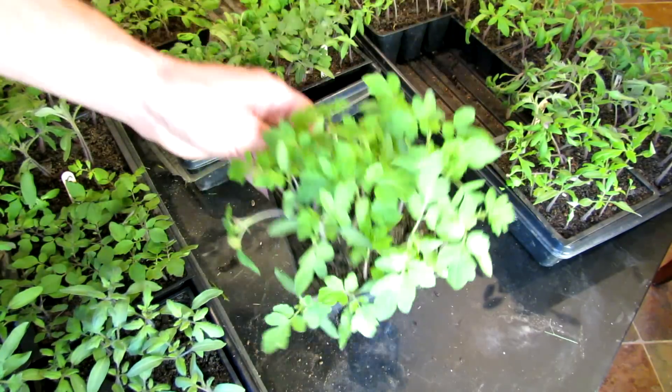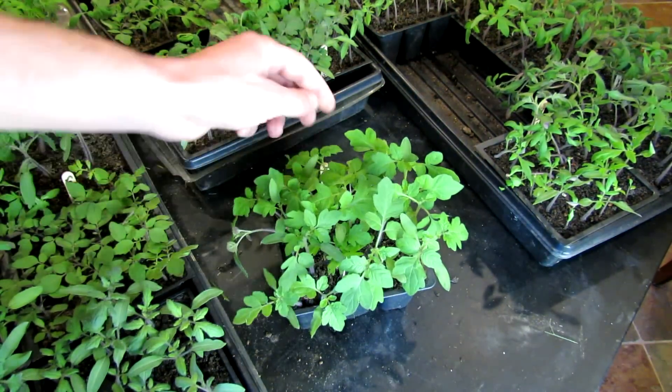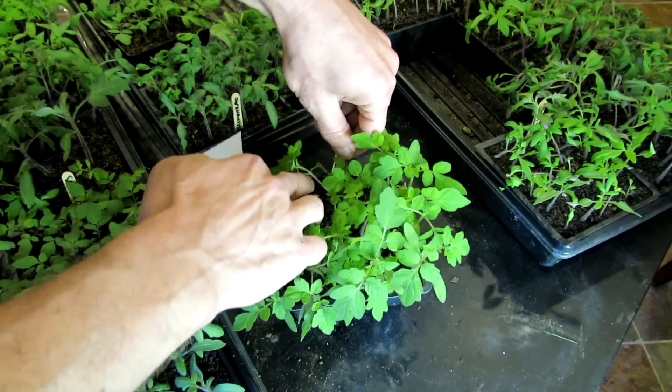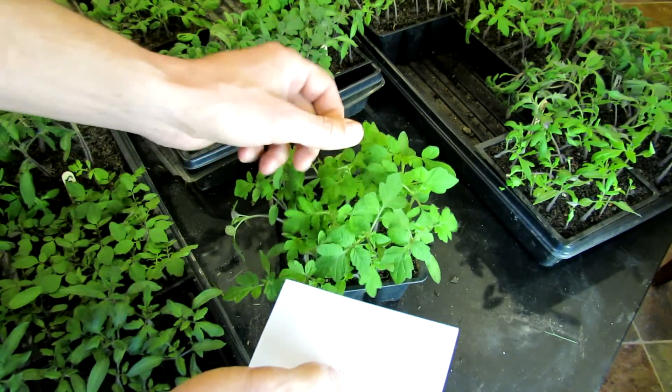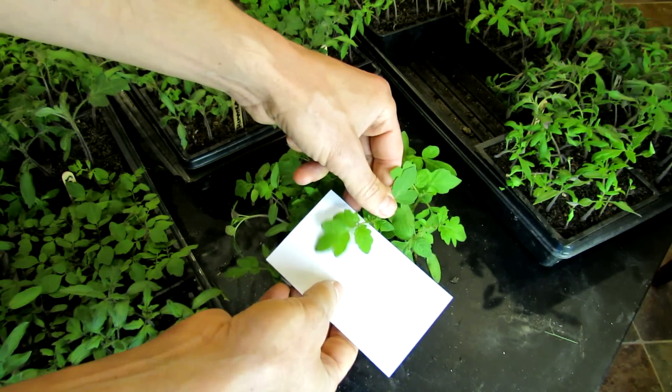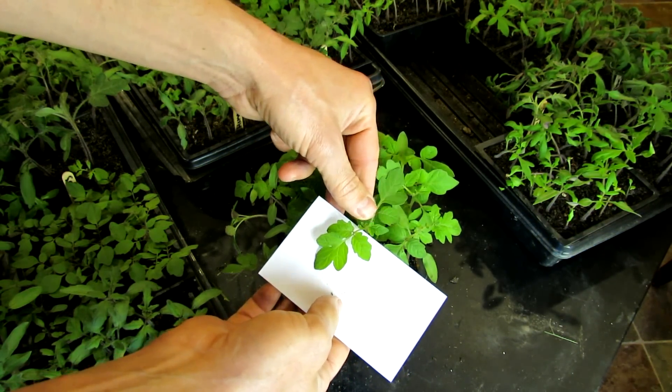Here's another standard leaf. This one is, I think it's just a cherry. This is a basic cherry tomato. And you can see the scalloped leaf again.